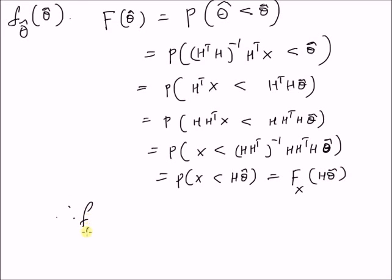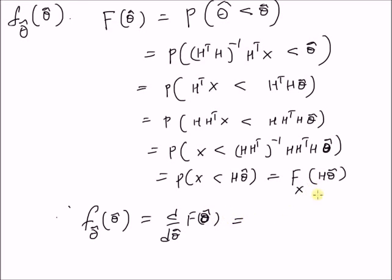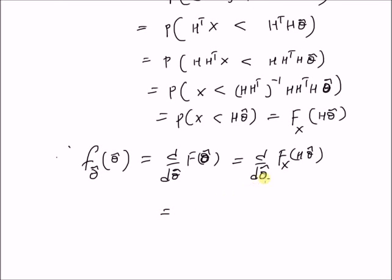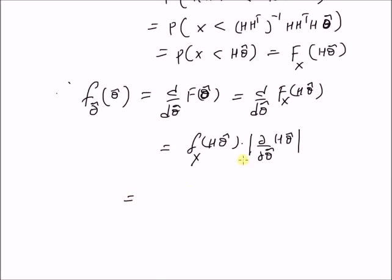Therefore, the PDF of theta hat at theta hat is equal to the derivative with respect to theta hat of the CDF, which equals the derivative of the CDF of the random vector x. By definition, the derivative of a CDF gives the PDF evaluated at H theta hat, multiplied by the determinant of the Jacobian, which is the determinant of H transpose, multiplied by the PDF of x at H times theta hat.